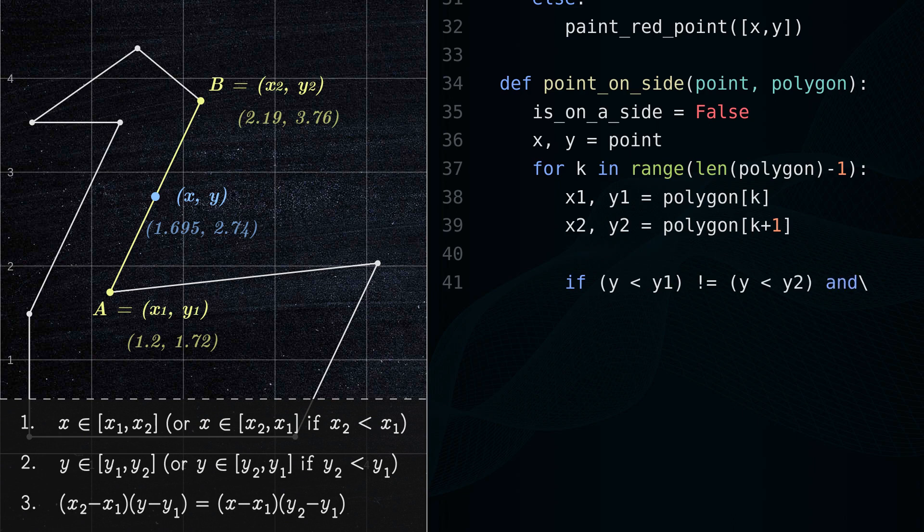Second, the y coordinate of the point is between the y coordinates of the endpoints of the line segment.